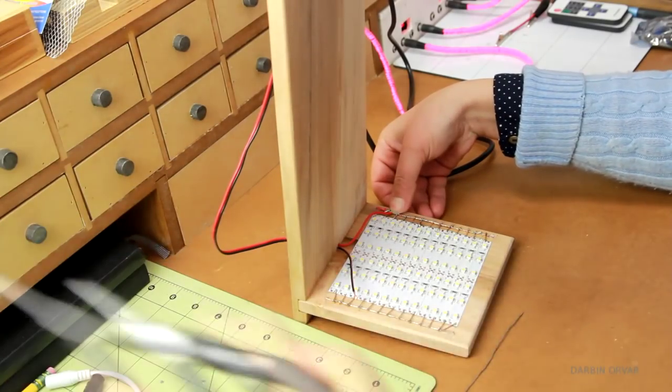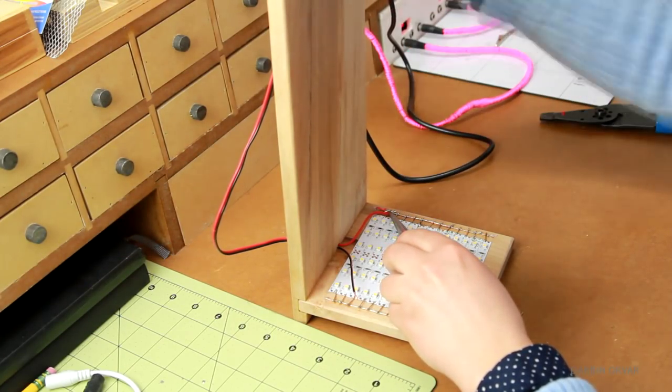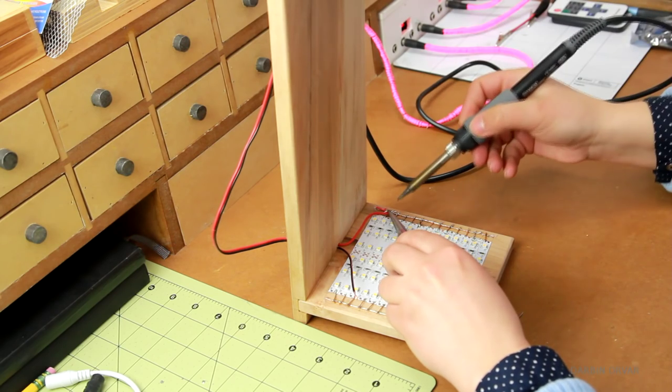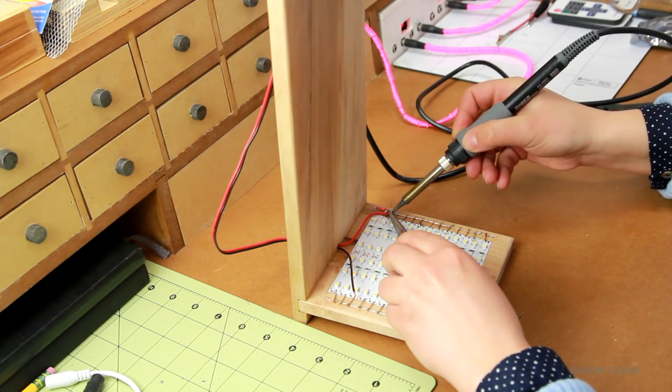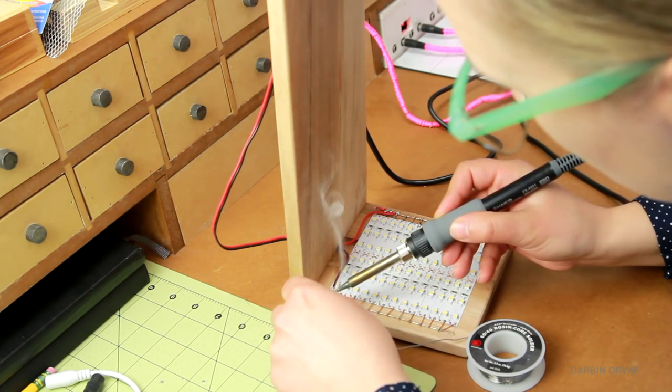Okay, so time to connect the wiring. So I have the wire coming up through the back piece. So I split it off, and I'm soldering the positive to the positive side, and the negative to the negative side.